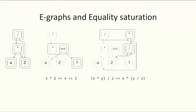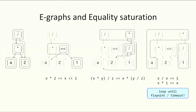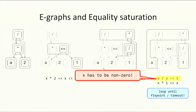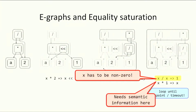We apply more iterations until we reach some fixed point or timeout. One thing to note is that the rule X over X to one is actually not sound. For this rule to apply, X must not be zero. In other words, we need semantic information about X from this eGraph.